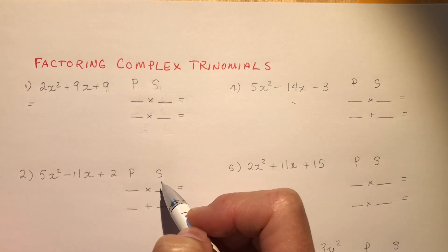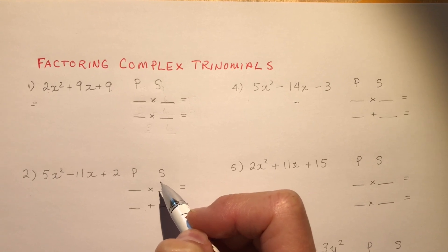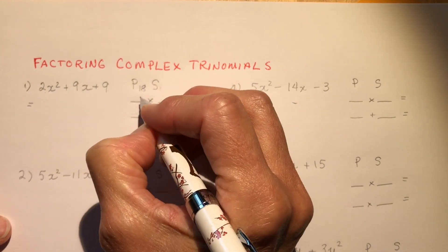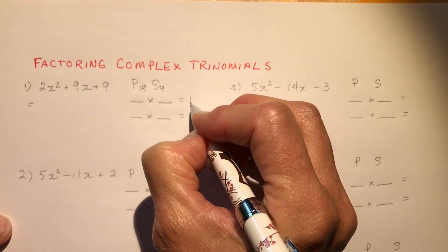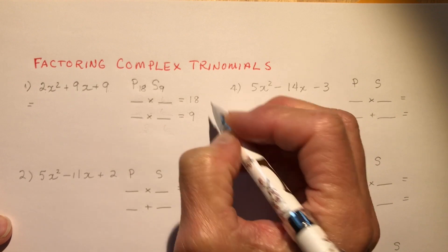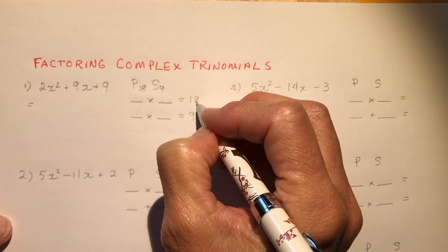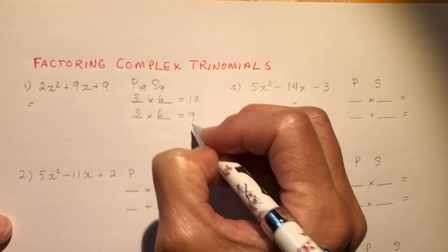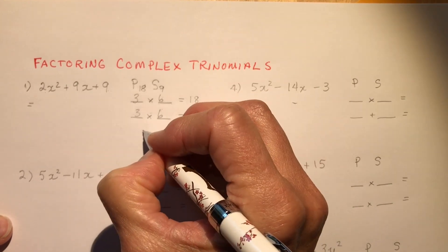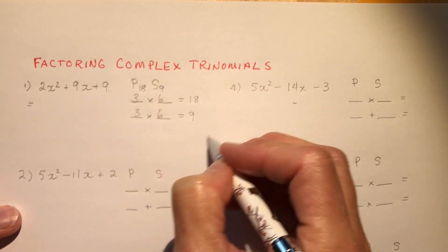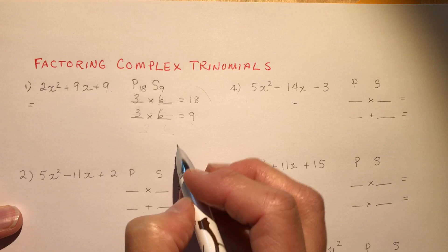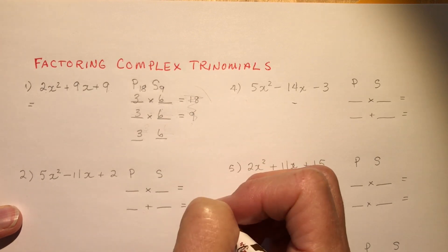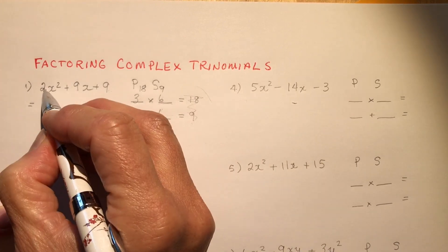First example: the product of first and last — the first is 2, the last is 9, product is 18. The sum of the one in the middle has to be 9. I need two numbers that multiply to 18 and add to 9: 1 and 18 won't work, 2 and 9 won't make 9 that way, but 3 and 6 — bingo. Both are positive so no sign changes. Now make two fractions using these numbers with the first term, which is 2, on the bottom.